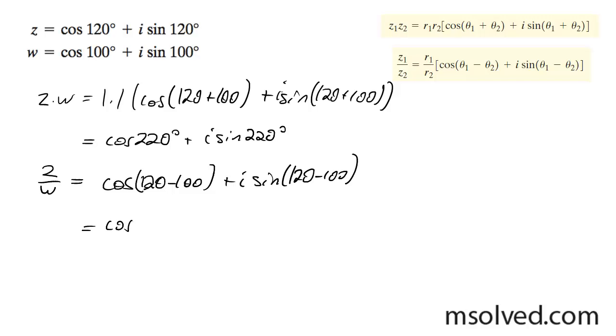And ultimately, we get the cosine of 20 degrees plus i sine of 20 degrees. That is it.